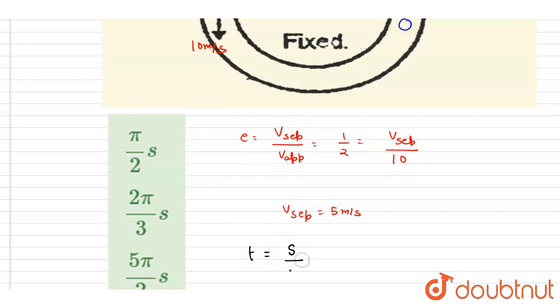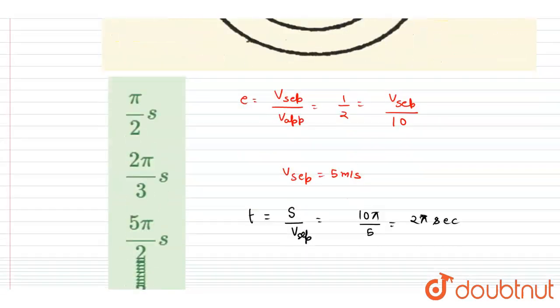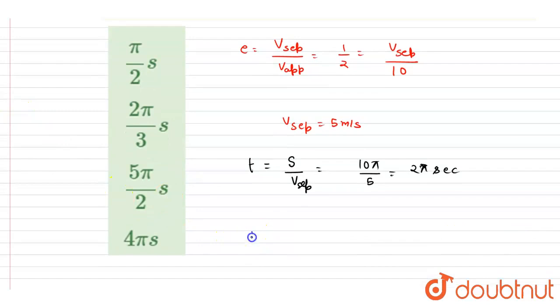distance to be traveled divided by separation velocity. It is 10π by 5, so it will be 2π seconds. Now we want the total time, and we will take t=0 as this point. So how much time will A take to travel half of the circumference? To travel half of the circumference distance, the